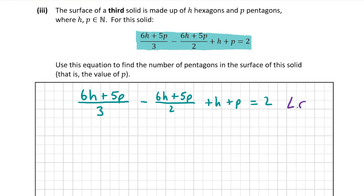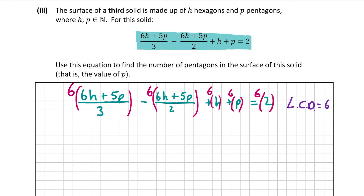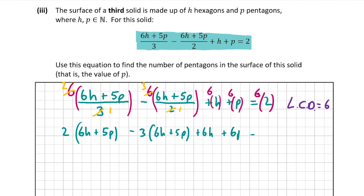The lowest common denominator is 6, so multiply everything by 6. For the first fraction: 3 goes into 6 twice, leaving 2 times (6H plus 5P). For the second fraction: 2 goes into 6 three times, leaving minus 3 times (6H plus 5P). Then we also have plus 6H, plus 6P, and 6 times 2 equals 12 on the right. Expanding the brackets: 2 times 6H is 12H, 2 times 5P is 10P, minus 3 times 6H is minus 18H, and minus 3 times 5P is minus 15P.